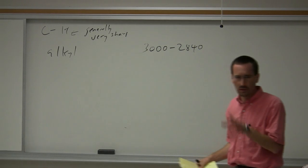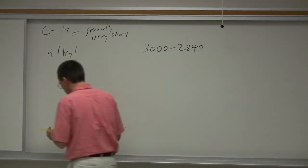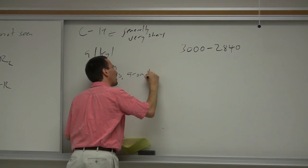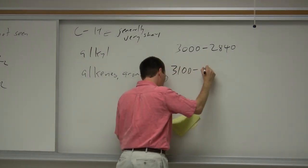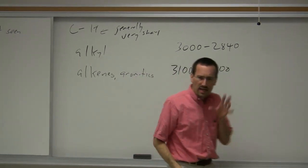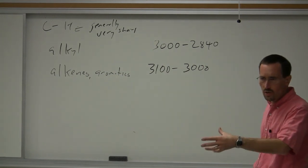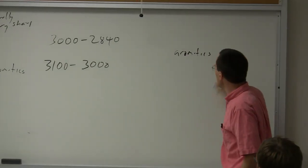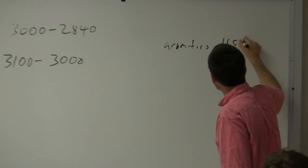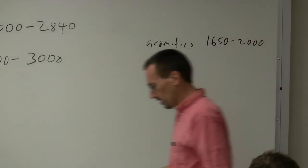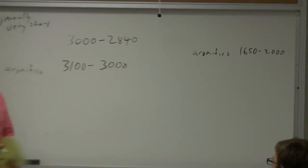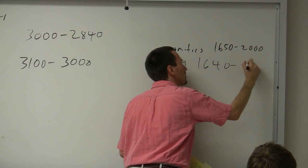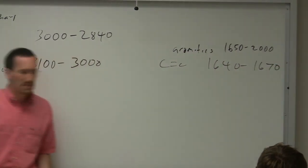Aldehydes can have cool CH stretches with Fermi resonance that clue you in. For alkenes and aromatics, we're generally talking about 3,100 to about 3,000 cm⁻¹, and you're going to get corroboratory peaks. Aromatics will have a series of bands from about 1,650 to about 2,000 wavenumbers. The alkene CC double bond stretch is generally sharp but not strong, at about 1,640 to 1,670 wavenumbers.